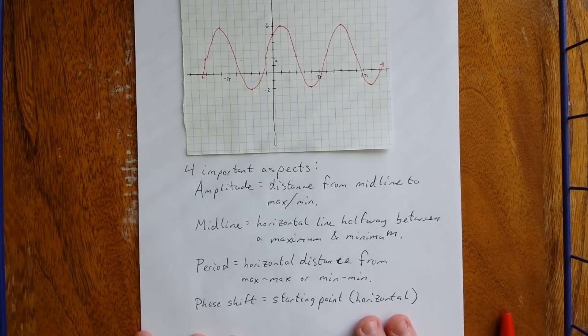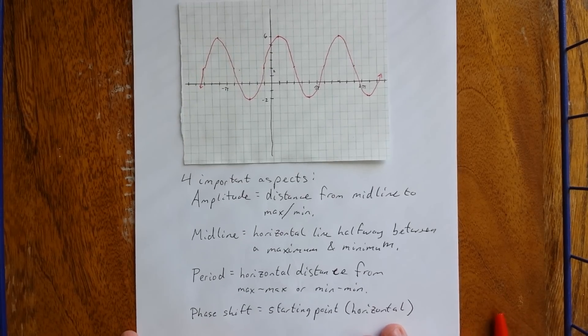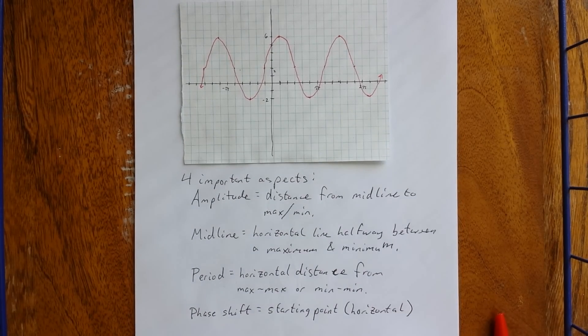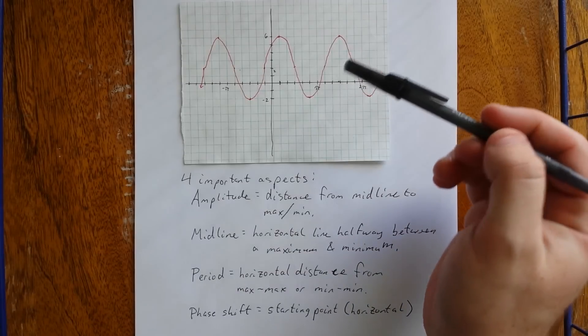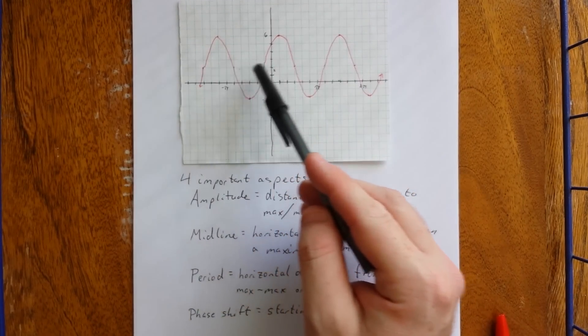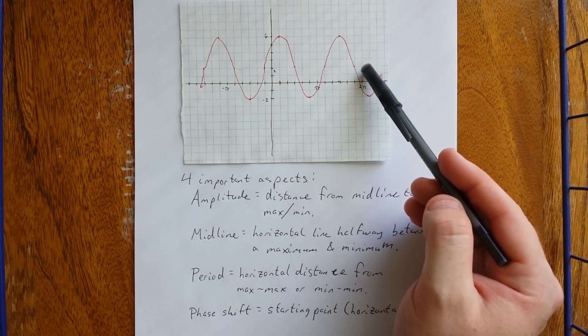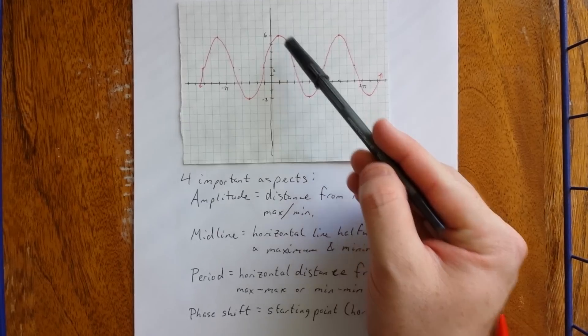Now, we do have the freedom to pick whatever starting point we want. But depending on what kind of curve we want, if we want a sine curve, we're going to want to start at a point that is directly on the midline. But if we want to use a cosine curve, we would start at a local maximum or a local minimum.